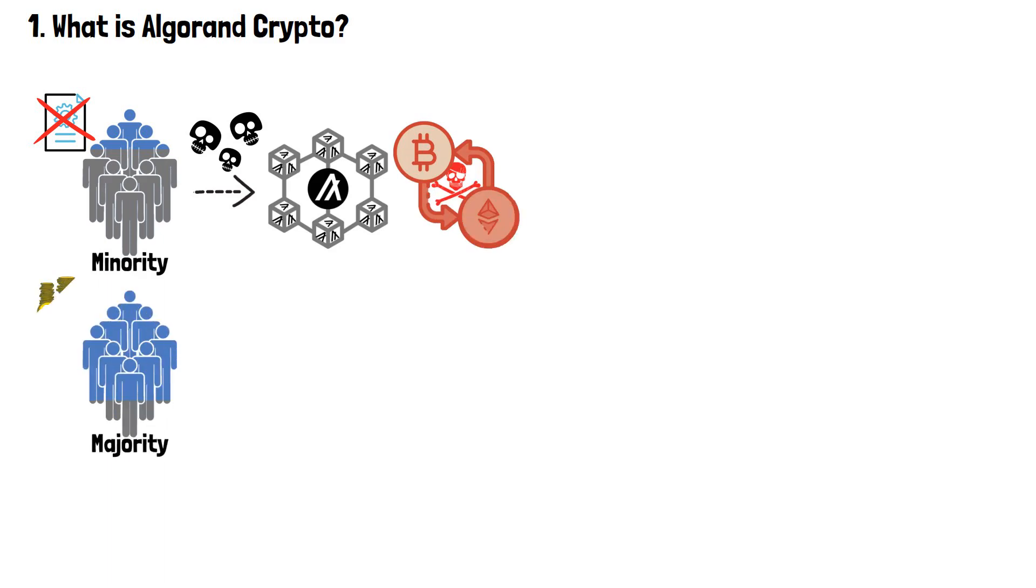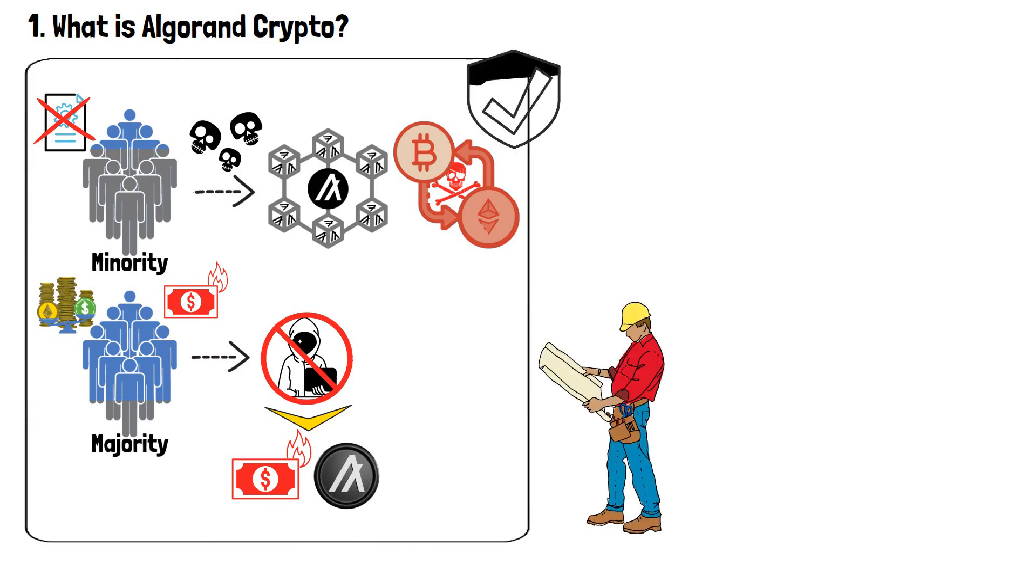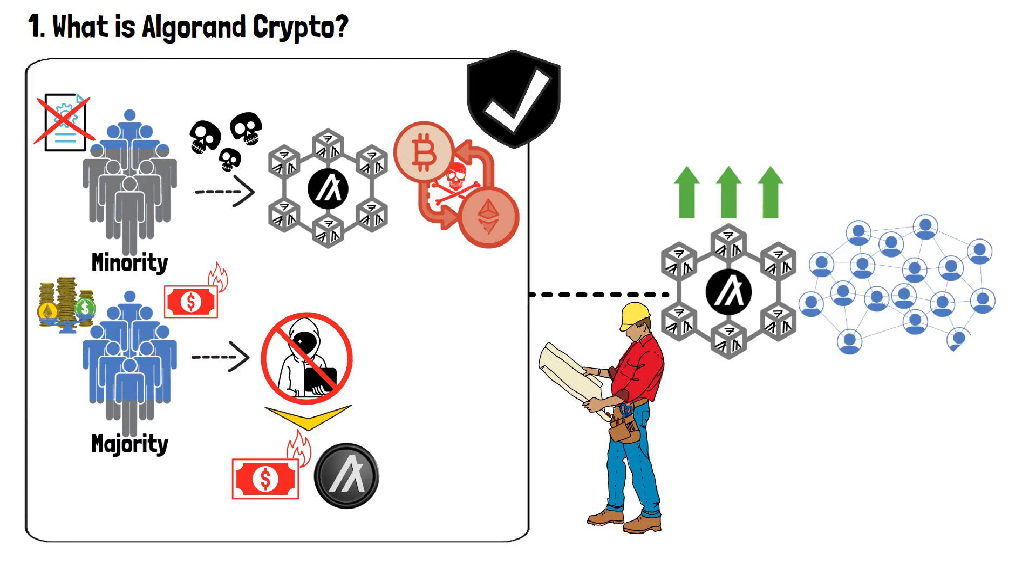Moreover, those who possess the majority stake have no incentive to misbehave, as doing so would undermine the value and purchasing power of the currency, ultimately devaluing their own assets. Such architectural principles safeguard the integrity of the Algorand system, fostering an environment where users can transact with confidence and trust in the stability of their assets.